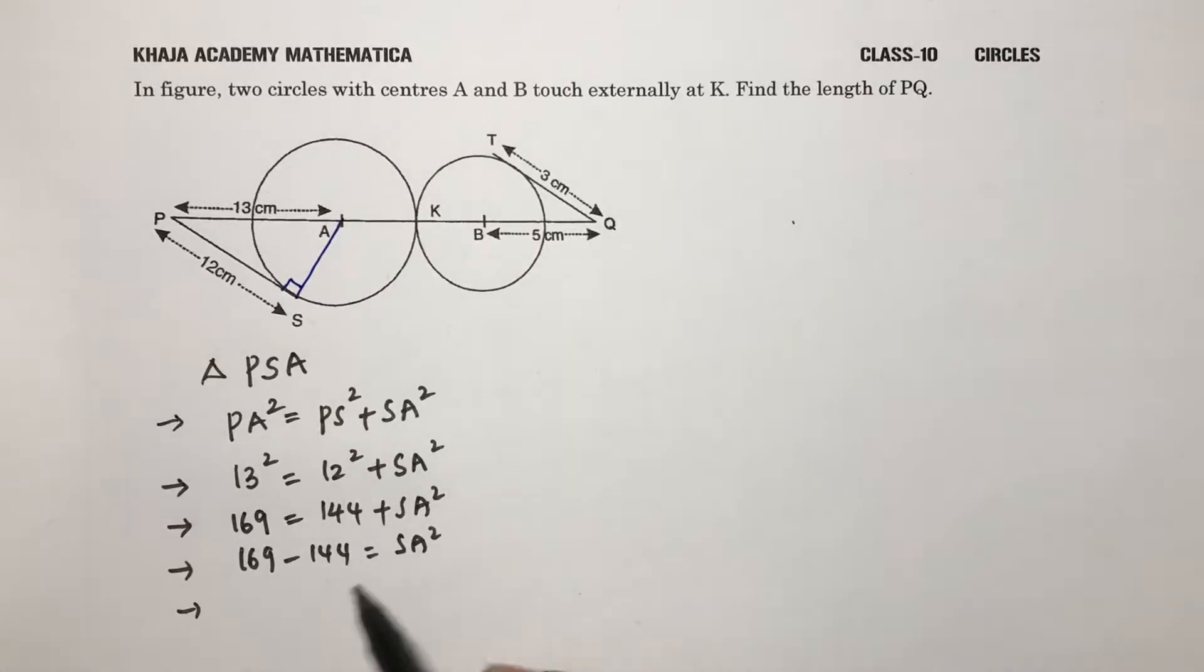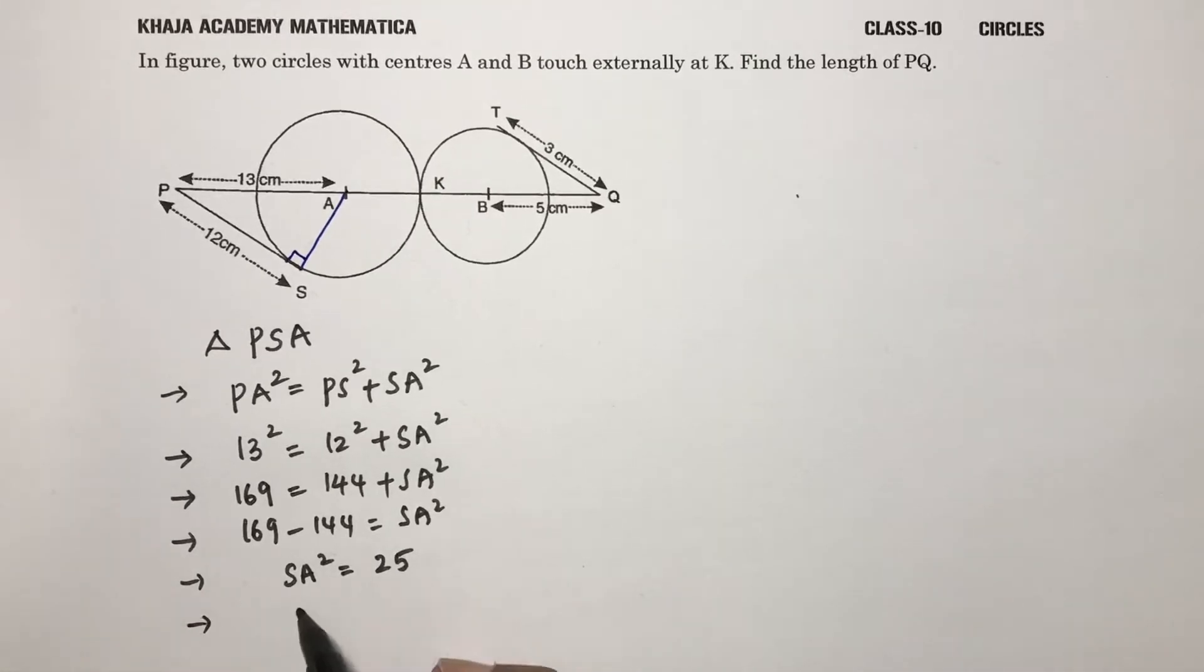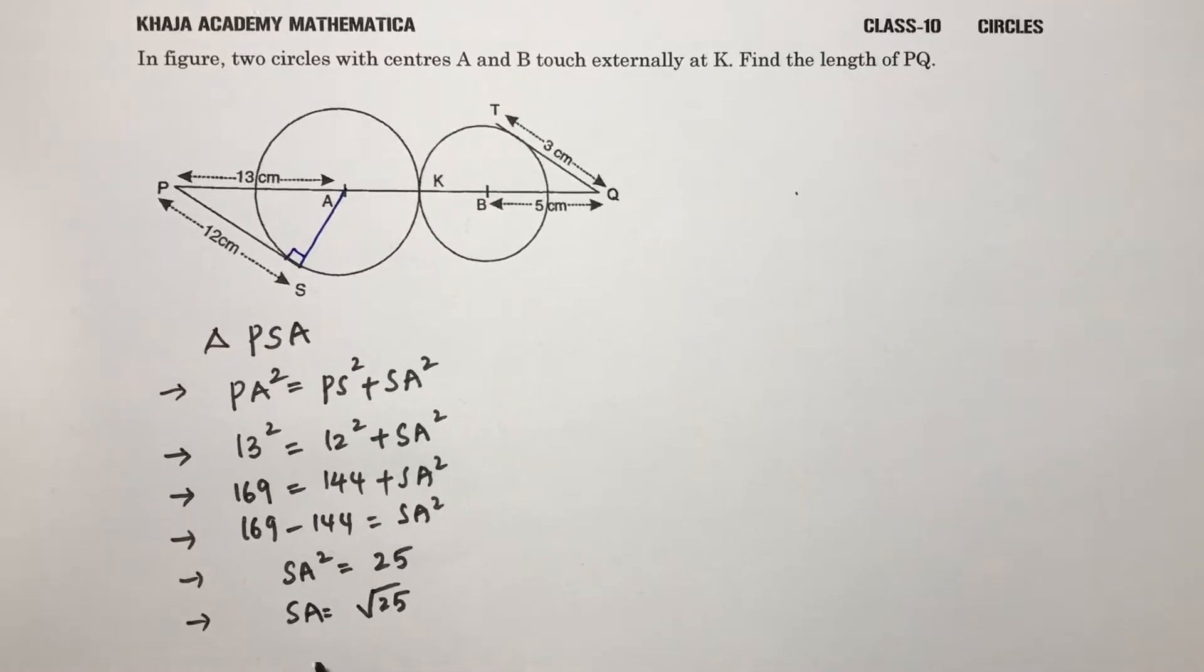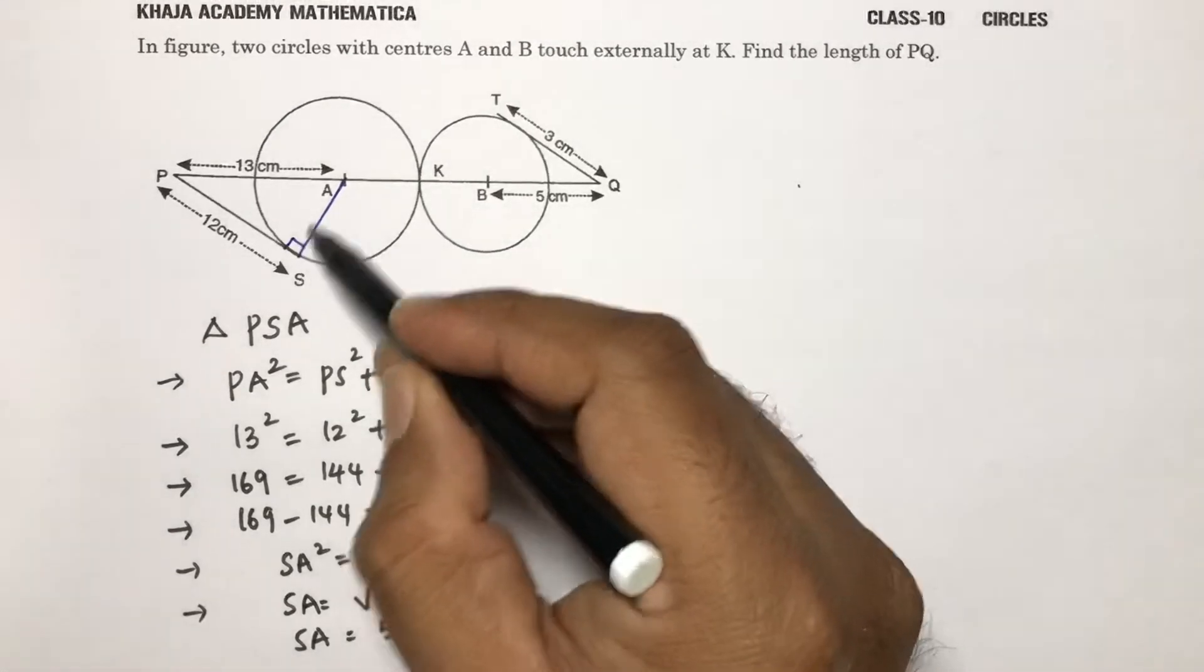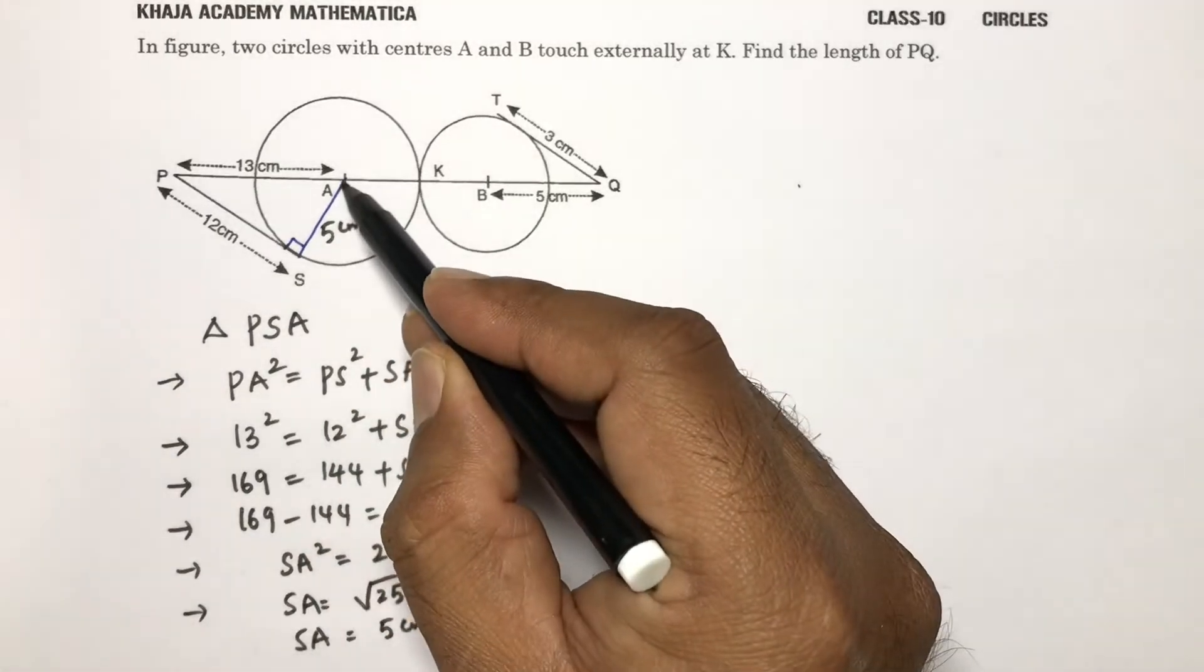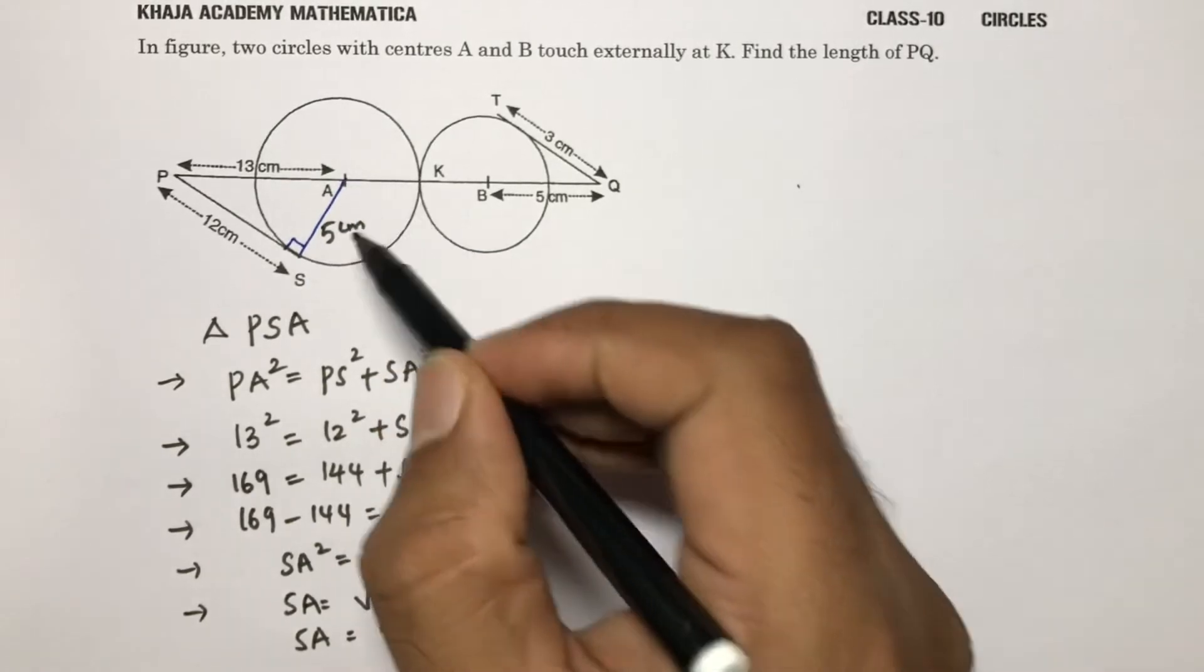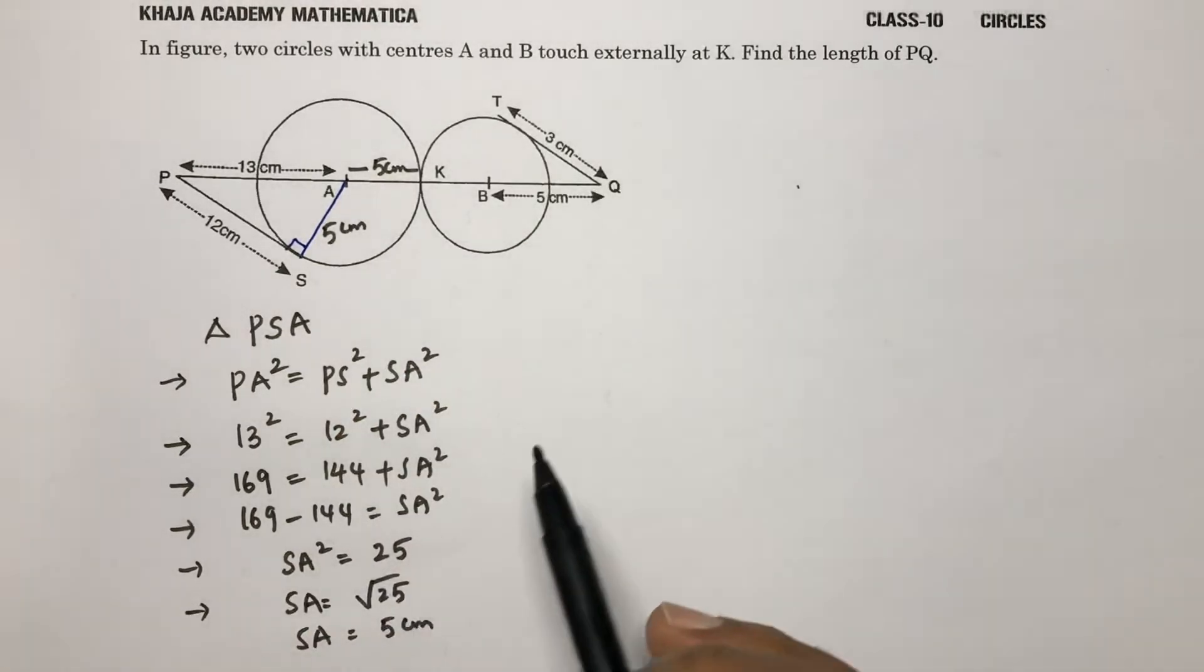SA square is 25, so SA value is square root of 25, SA is 5 centimeters. If SA is a radius, AK is also a radius, so this also will be 5 centimeters. Now in the same way, if you join BT.